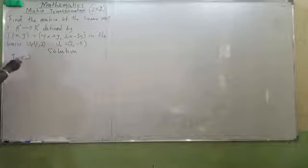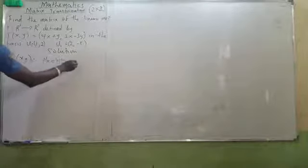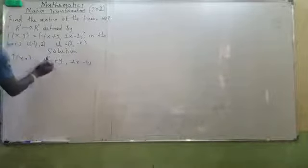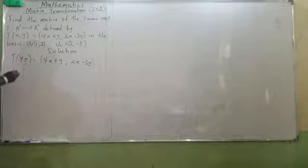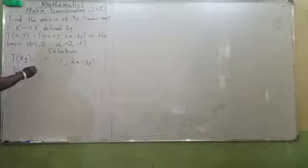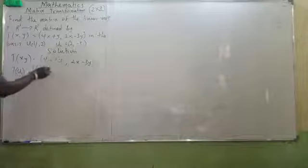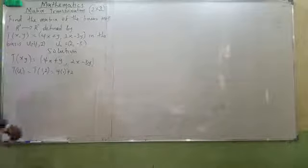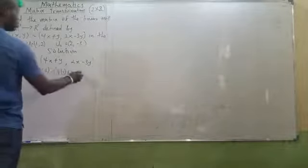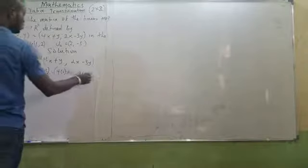The first thing is I will start from my T of x, which is very important: T(x,y) = (4x + y, 2x − 3y). Now, I will pick up my u1. By u1, it means u1 = (1, 2) — wait, which will be equals to 4 bracket of 1 plus 2, comma, and 2 bracket of 1 minus 3 bracket of 2.